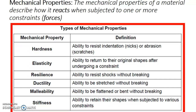For instance, if we discuss an object such as a stapler — made of metal or plastic — we can ask: is the metal hard? Hardness means the ability to resist indentation or abrasion. Elasticity is the ability to return to the original shape after undergoing a constraint. For the stapler, I would use metal because it's not elastic — I don't want it to change shape.